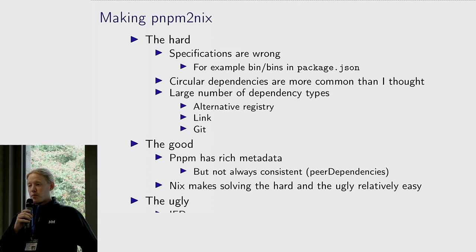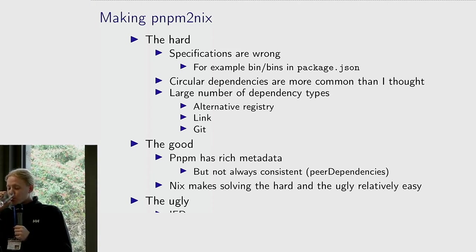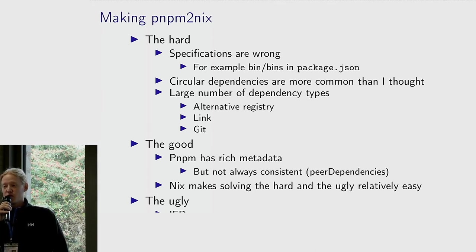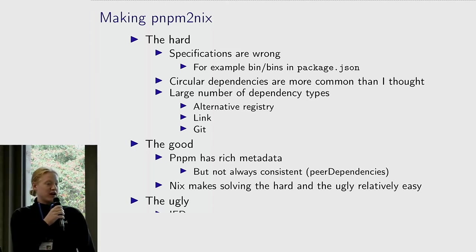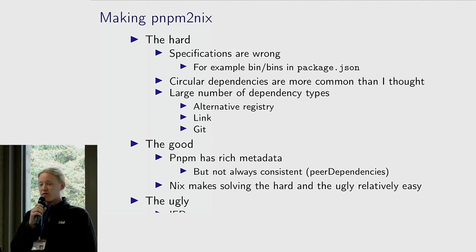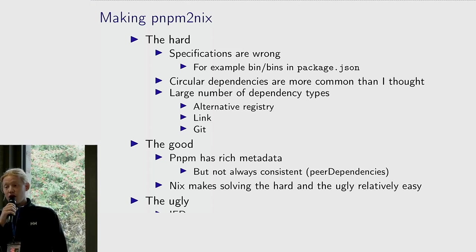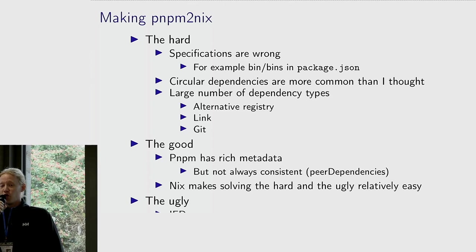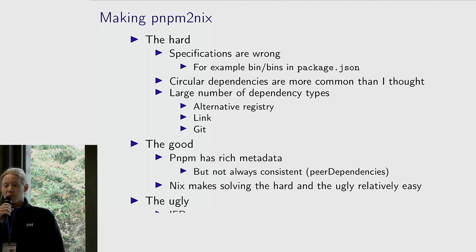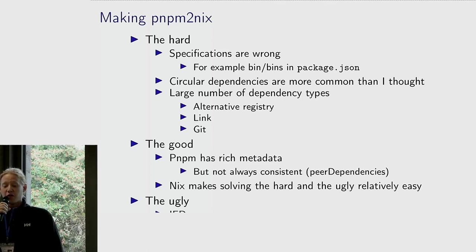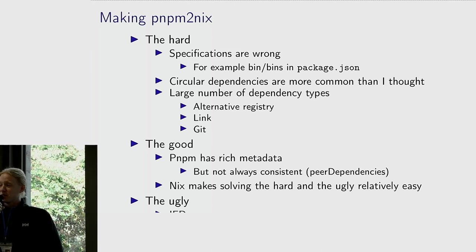There were a lot of hard points about making this tooling. One of the hardest is that the specifications in Node.js are all wrong. They say you can't combine certain attributes like bin and bins in your package.json file, but in reality there are a lot of packages depending on this kind of behavior. The specifications being wrong is pretty much a rule rather than the exception, so you do have to look at how applications actually behave rather than reading specifications. Circular dependencies are way more common than I thought — before I started this project, I had no clue circular dependencies were even a thing in Node.js. I would imagine that would lead to infinite recursion, but it does not. They do have some kind of fake fixed-point stuff going on.